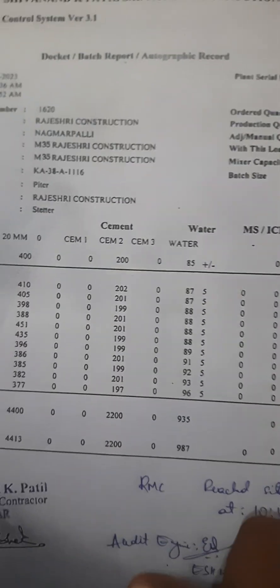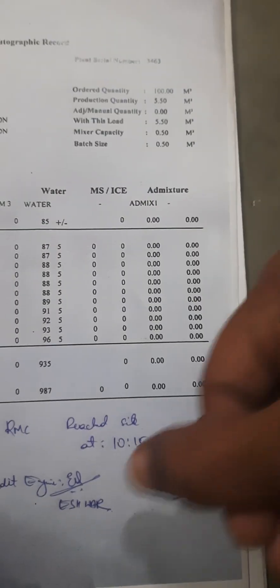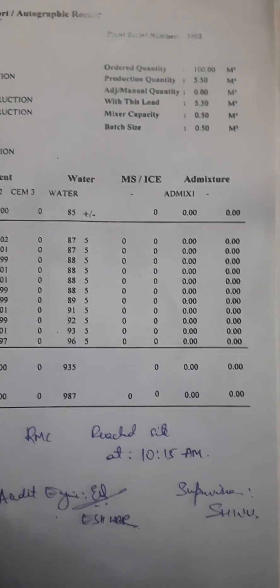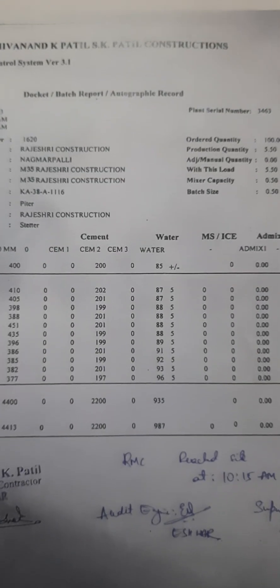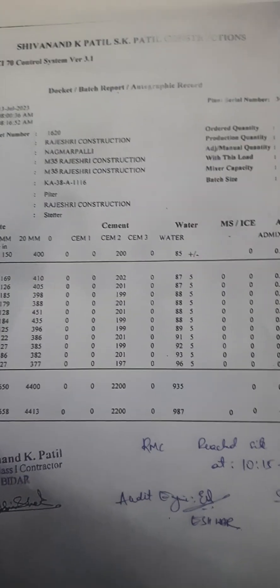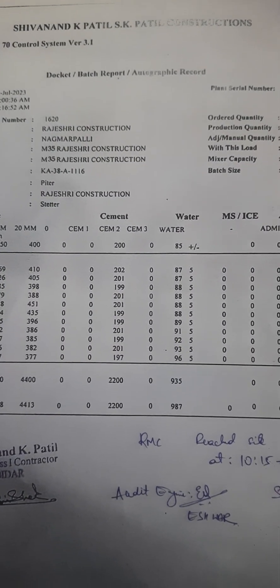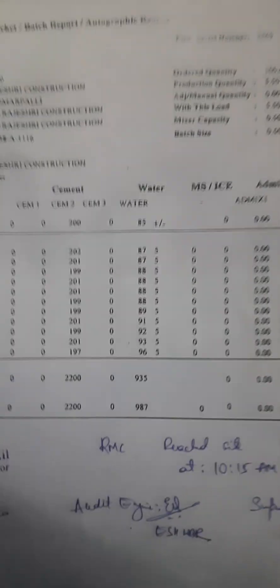After that, you and the supervisor need to sign the report. If the concrete cannot be placed within that half an hour, you have to reject it. The next thing after receiving the RMC is to perform the slump test to check whether sufficient slump has been achieved.